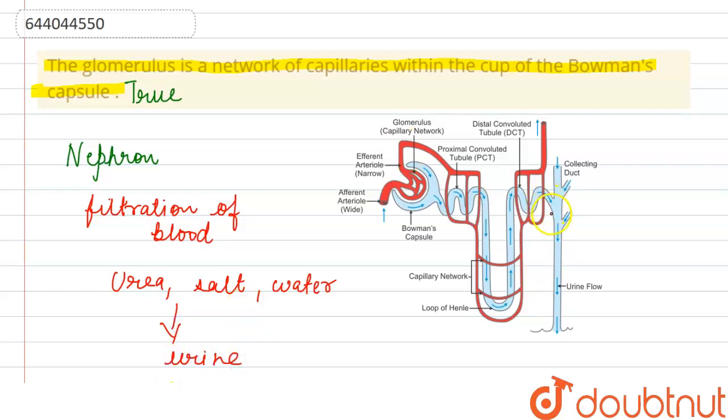This is the structure of the nephron, and we will see that there is a presence of the cup-like structure which is known as the Bowman capsule. Inside the Bowman capsule, the red one is representing the capillary network which is known as the glomerulus.